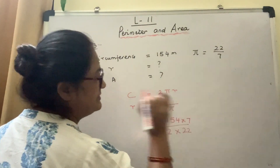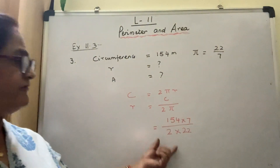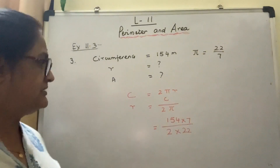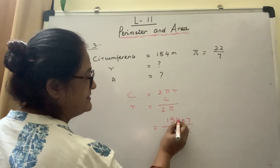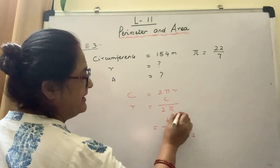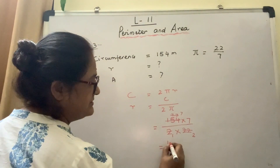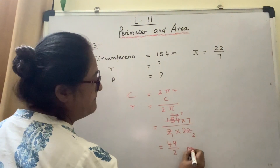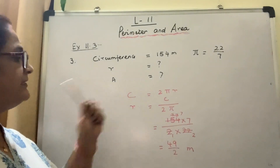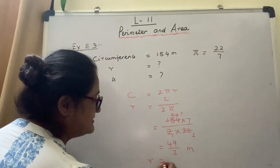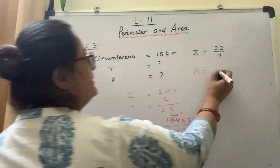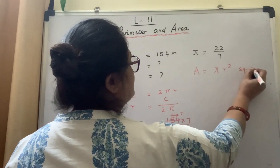Dividing by a fraction is multiplying the reciprocal. So: 154 × (7/22) ÷ 2. Cancel: 2 into 154 gives 77, 11 into 22 gives 2, 7 into 7 gives 1. So radius = 49 upon 2 meters. Leave the radius as 49 upon 2. Now we need to find the area. Therefore, radius is 49 upon 2 meters. Area = πr².